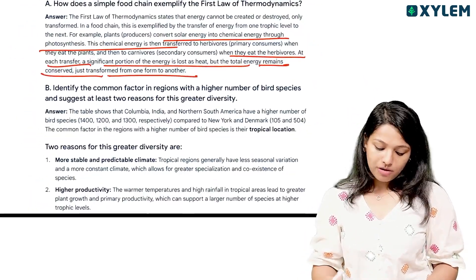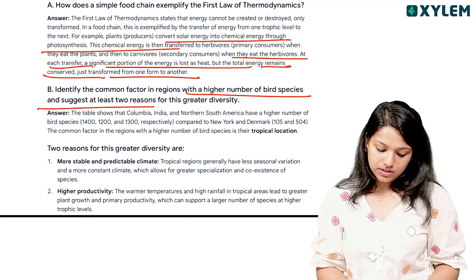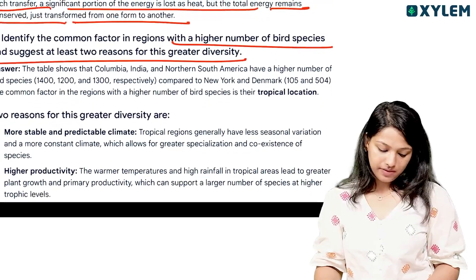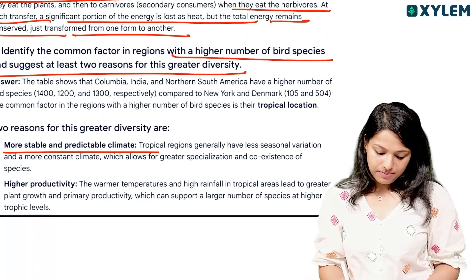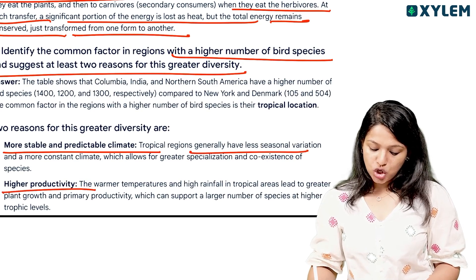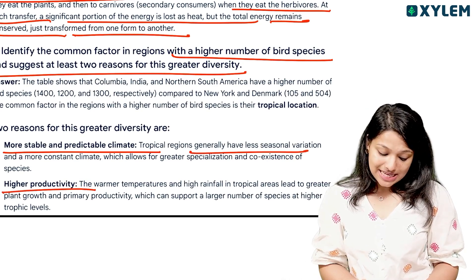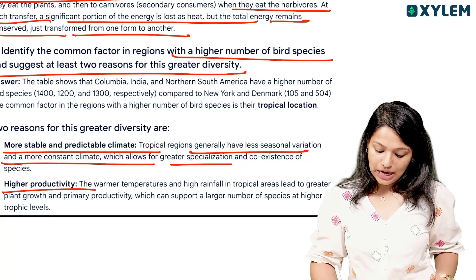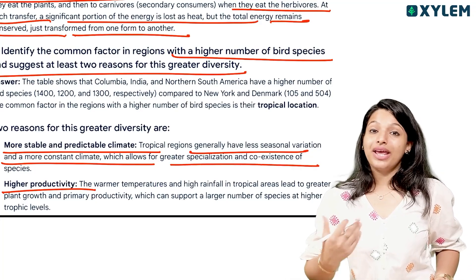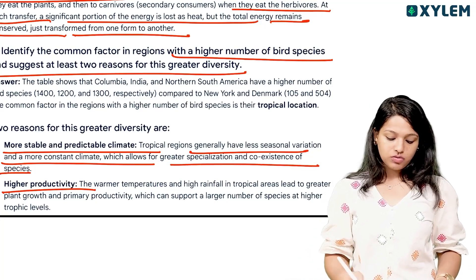The common factors in regions with a high number of bird species include at least two reasons for greater diversity: more stable and predictable climate, and higher productivity. Tropical regions generally have less seasonal variation and a more constant climate, which allows for greater specialization and coexistence of species.